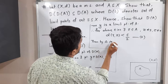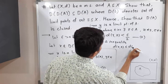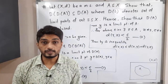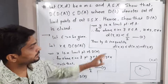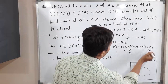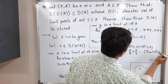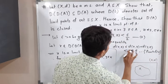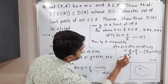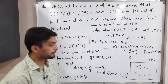Then, by the triangle inequality, d(X, Z) is less than or equal to d(X, Y) plus d(Y, Z). From inequality 1, d(X, Y) is less than epsilon by 2, and from inequality 2, d(Y, Z) is less than epsilon by 2. Therefore, from 1 and 2, we get d(X, Z) less than epsilon by 2 plus epsilon by 2, which equals epsilon. So our conclusion is d(X, Z) less than epsilon, where Z belongs to A and X is not equal to Z.